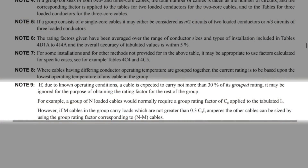The note continues: for example, a group of n loaded cables would normally require a group rating factor of Cg applied to the tabulated It. However, if m cables in the group carry loads which are not greater than 0.3 × Cg × It amperes, the other cables can be sized by using the group rating factor corresponding to n minus m cables.